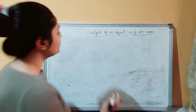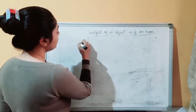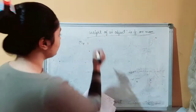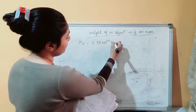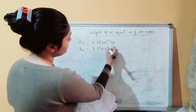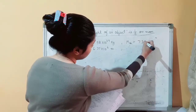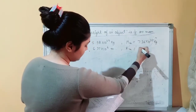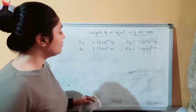First, we need to know the mass of the Moon and Earth. Mass of Earth, M_E, is 5.98 × 10²⁴ kg. Radius of Earth is 6.37 × 10⁶ meters. Radius of Moon is 1.74 × 10⁶ meters. These are the values we will use to prove that the weight of an object on the Moon is 1/6th.